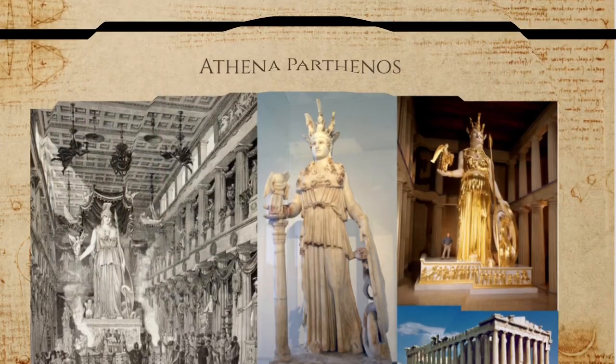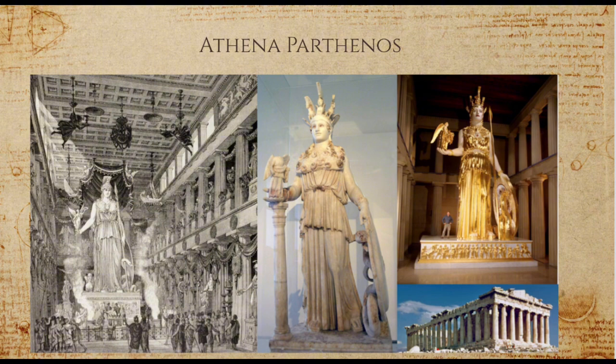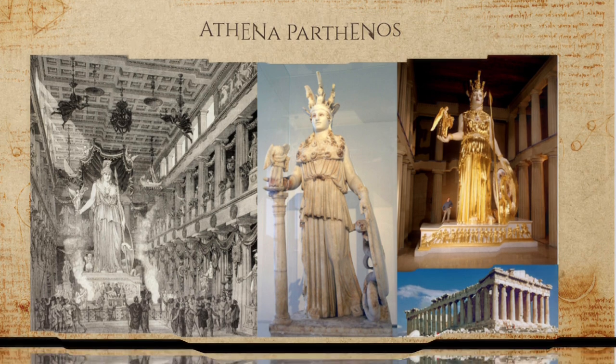Much of their artwork was dedicated to the Greek gods — not only statues, but architecture as well. For example, Phidias was an Athenian sculptor who created an 11.5-meter-long statue of Athena Parthenos. The sculpture of the goddess Athena was created in honor of her and to serve as an offering for her protection and wisdom.